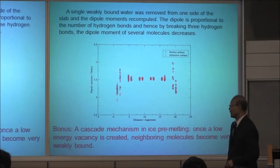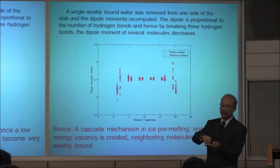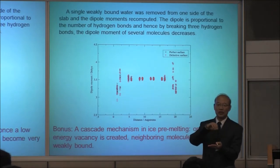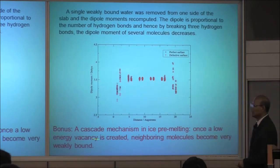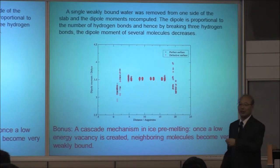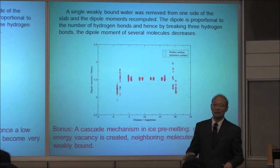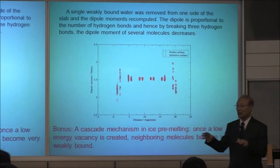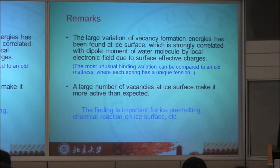Besides that, we found that on the ice surface, if there is a vacancy, the neighboring water molecule will be very likely to form another vacancy. This phenomenon is like a domino effect — one falls down and the other falls down together. So the melting temperature is increased.